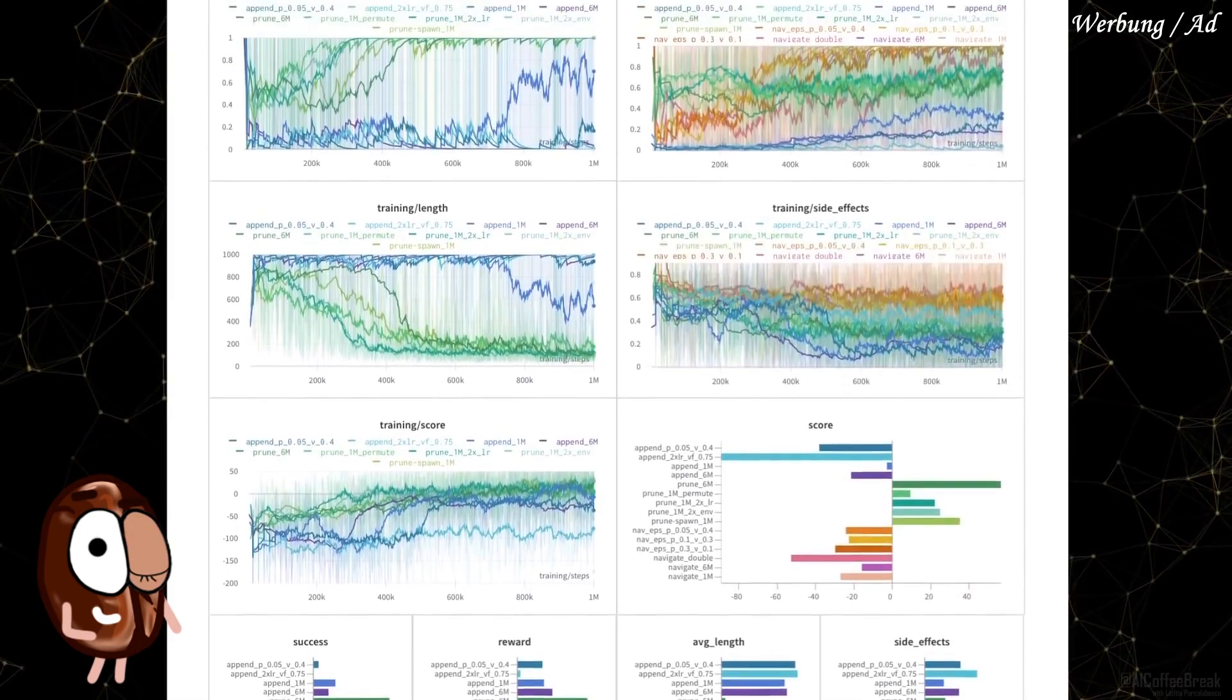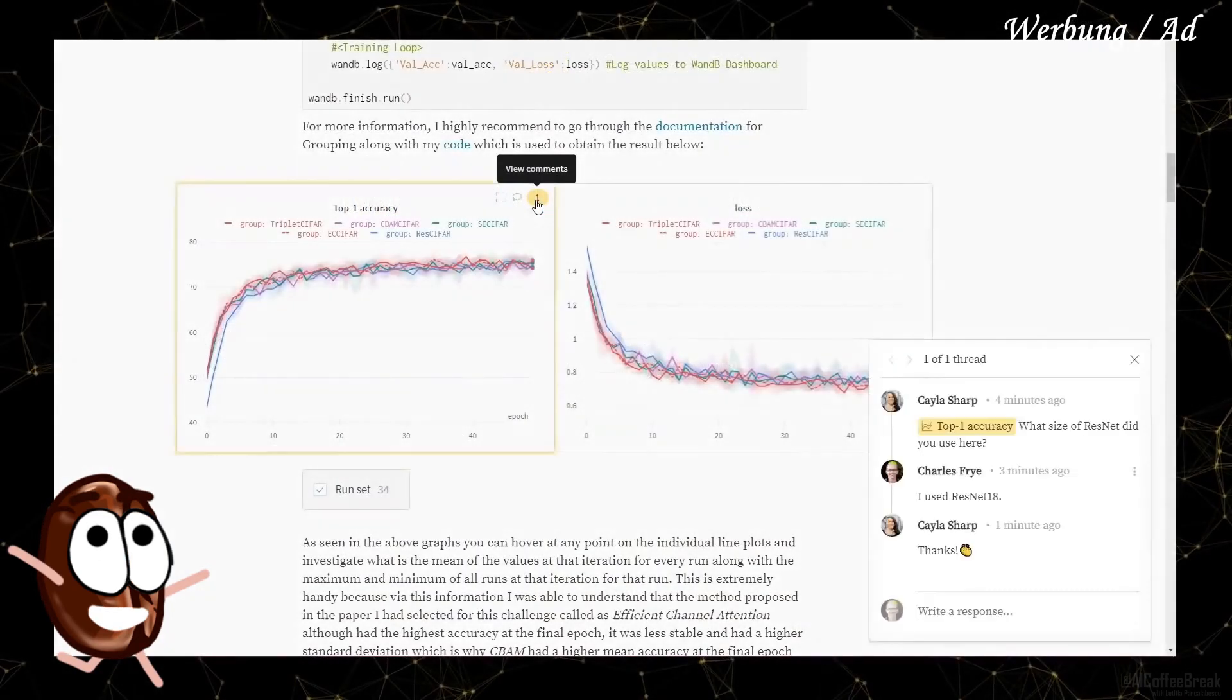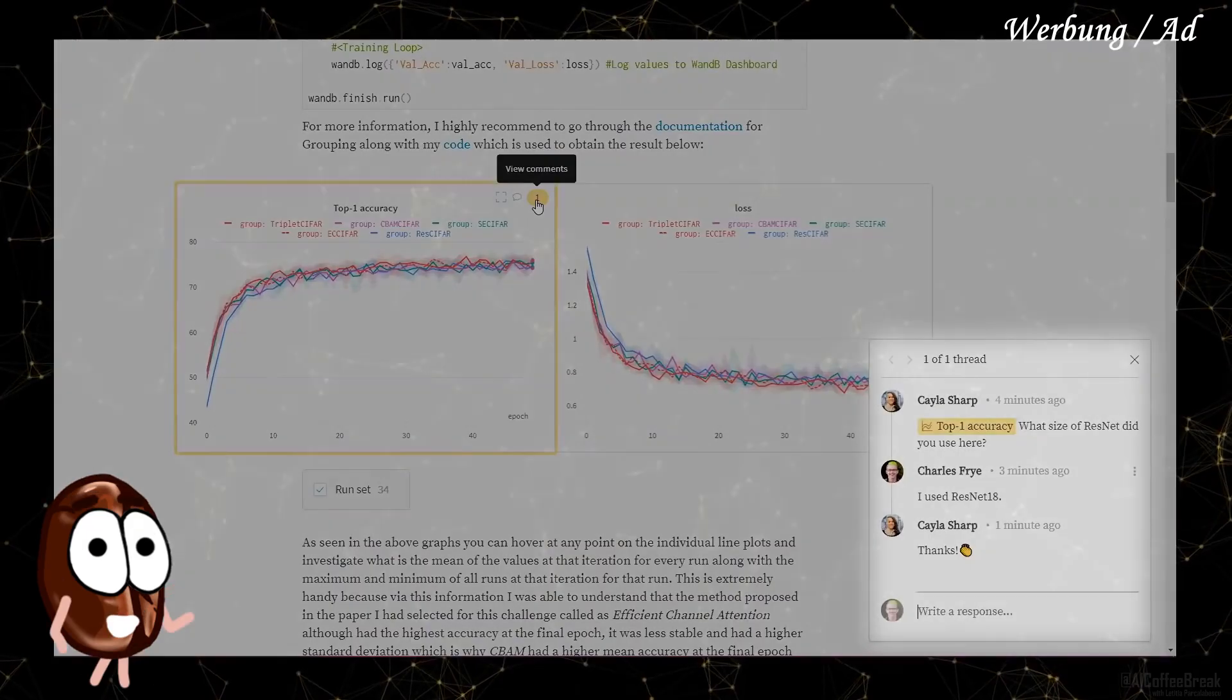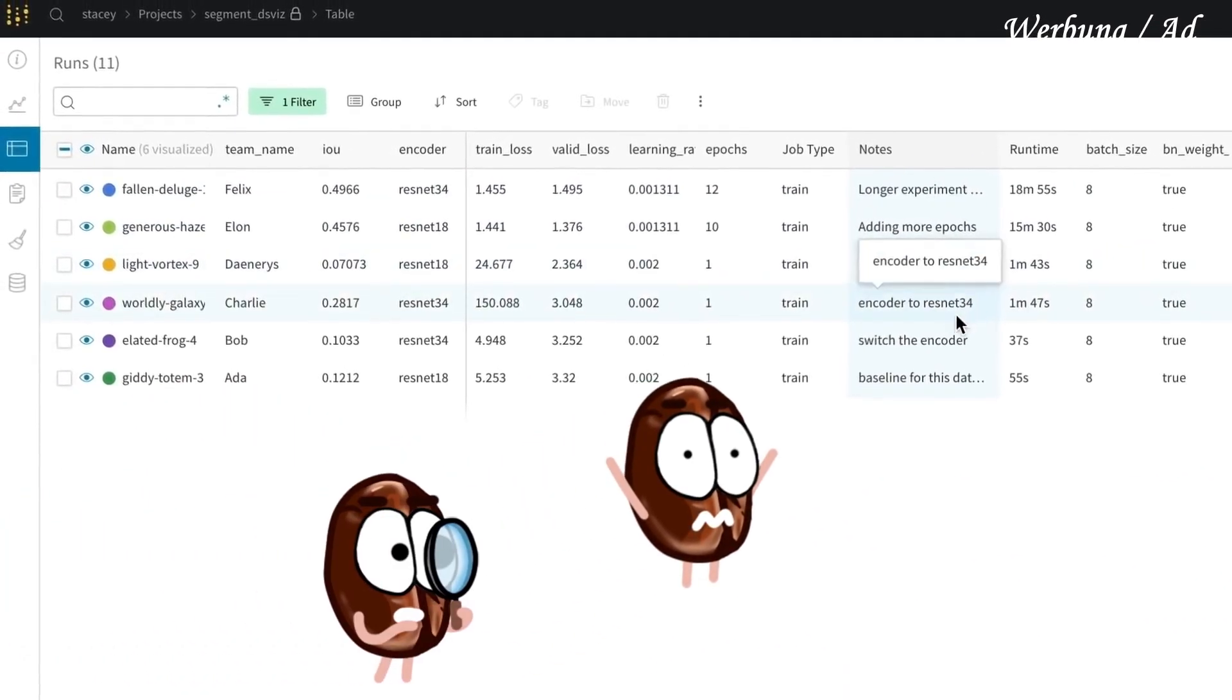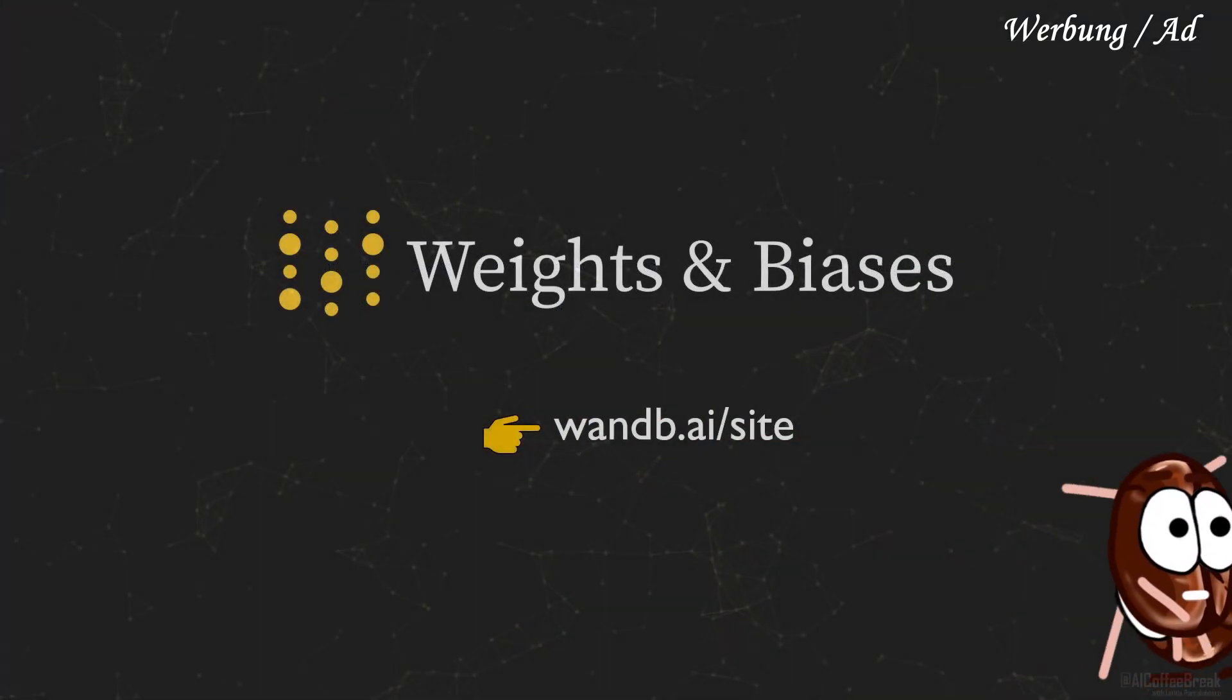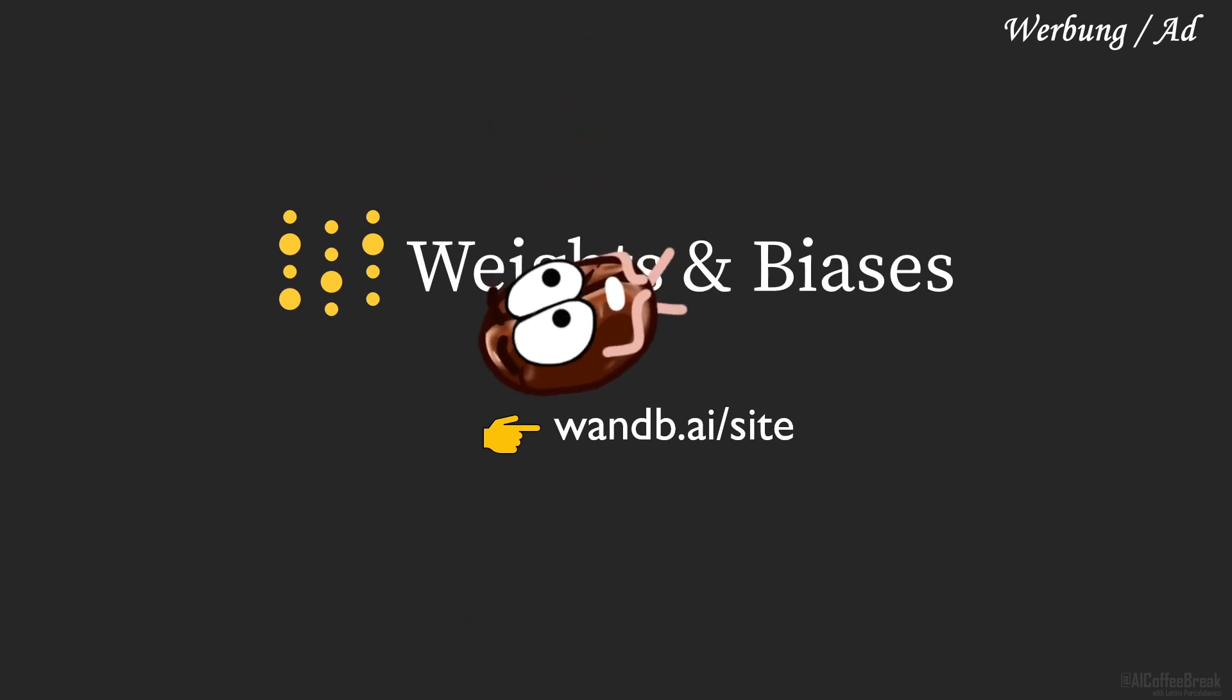Of course, the big players need paid plans, but if you are a student like me who wants to stay organized, even in the advent of the paper deadline when all your coffee beans are going crazy and everything is a mess and irreproducible from that chaotic Excel spreadsheet you use for tracking experiments, then you should give Weights and Biases a try.